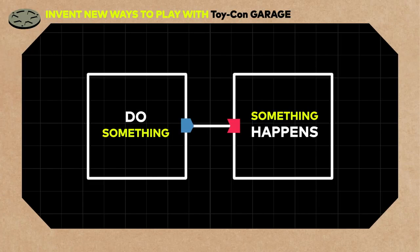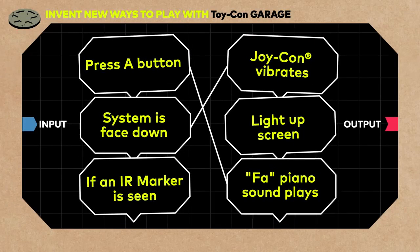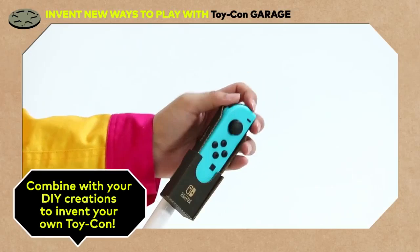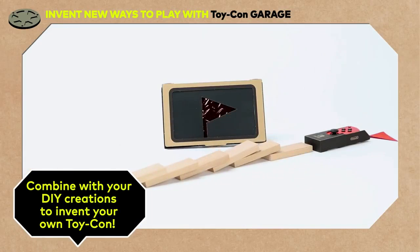Do something, and something happens. Combine different inputs and outputs to determine what each system does. Then, add this to your DIY creations to invent your very own new Toy-Con.